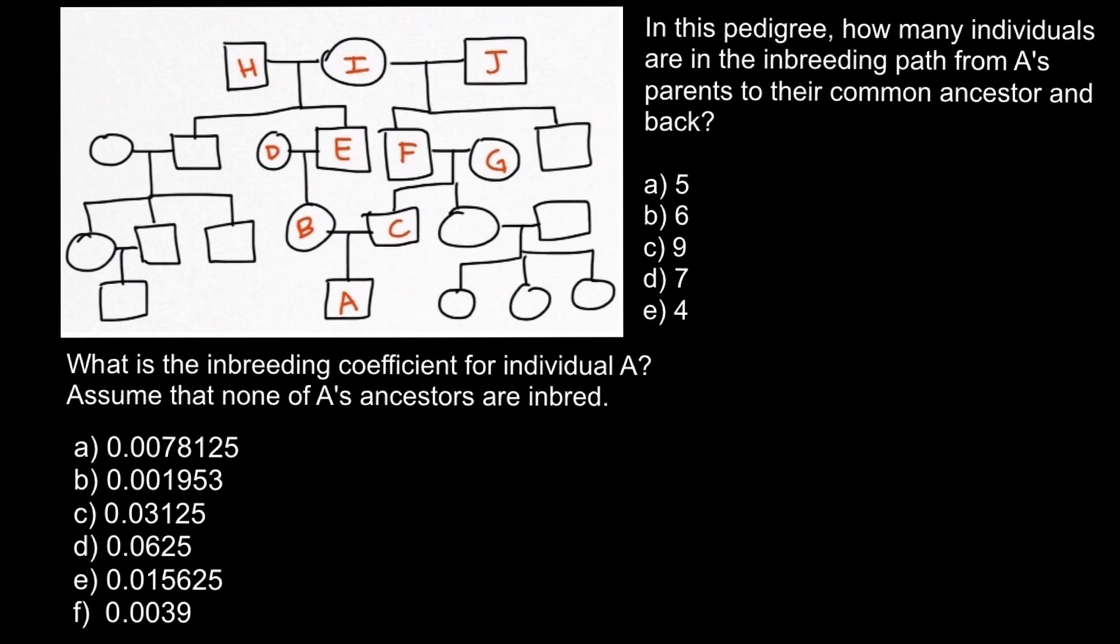So here's the first question: In this pedigree, how many individuals are in the breeding path from A's parents to their common ancestor and back? Here we have a person A, and here are the person's parents. Square stands for the male and circle stands for the female.